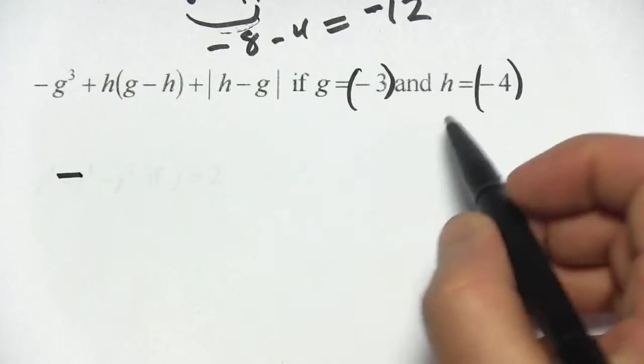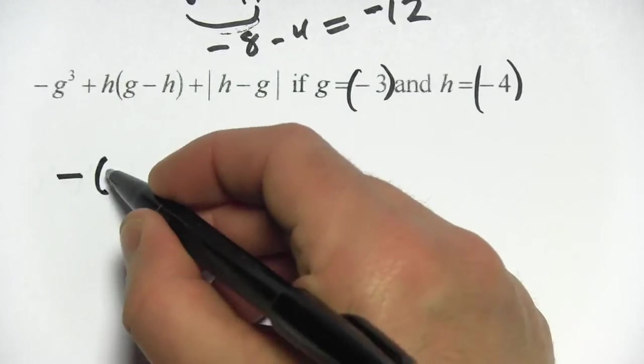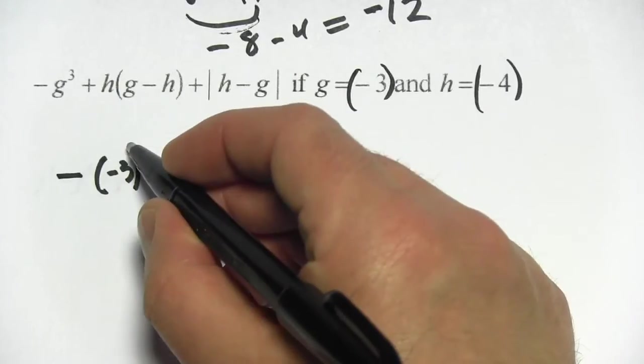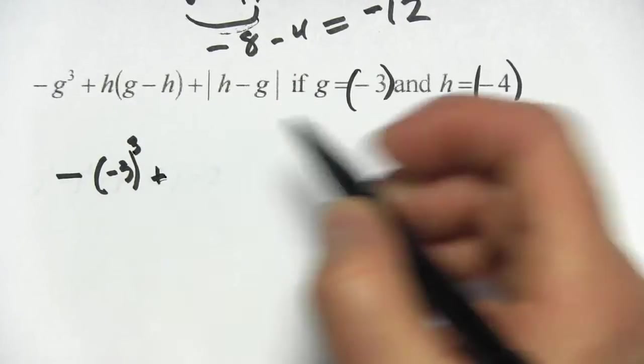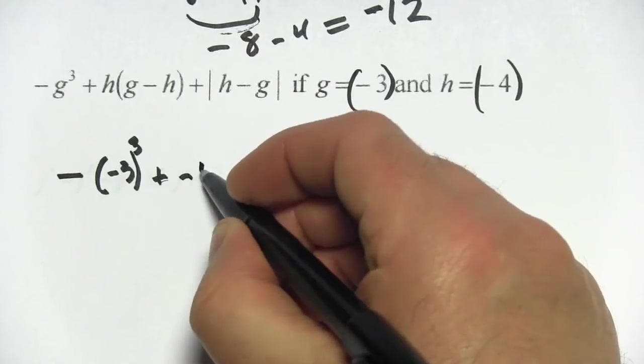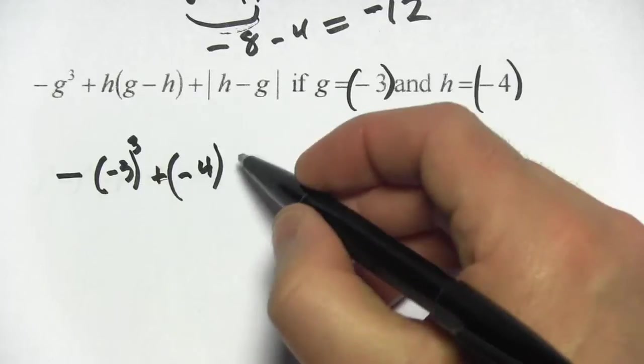So I start with a negative sign, then I have g which is negative 3, and then I have to raise that to the third power. Then I have h which is negative 4, and then h which is negative 4.